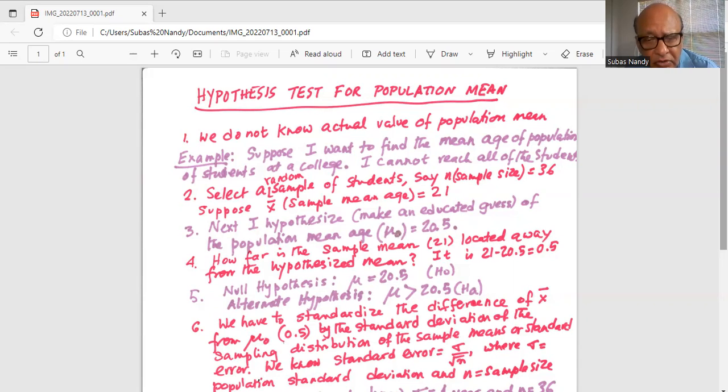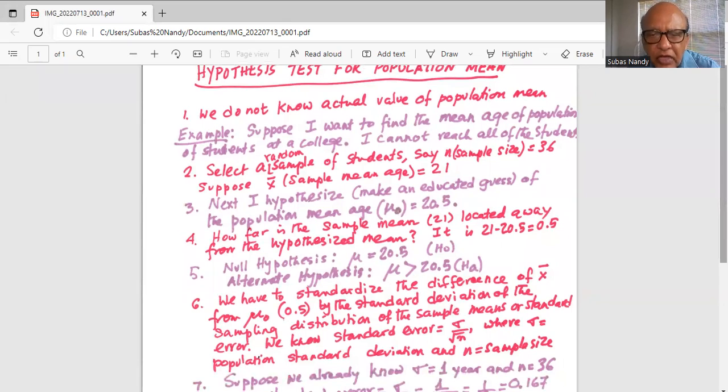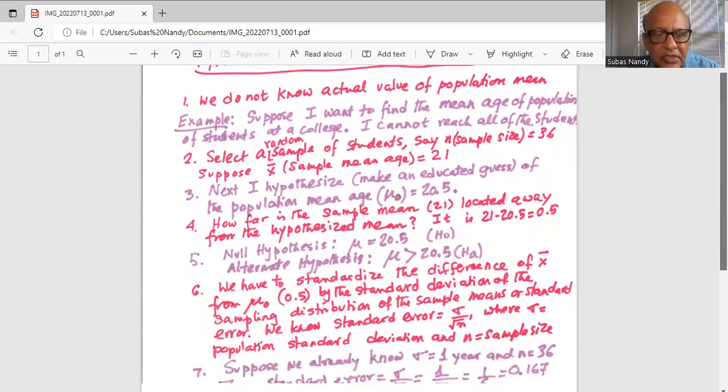My alternate hypothesis mu greater than 20.5. We have to standardize the difference of x bar from mu0 which is 0.5 which I just now calculated by the standard deviation of the sampling distribution of the sample means which is also known as standard error. We know the standard error as sigma divided by square root of n where sigma is the population standard deviation and n is the sample size.